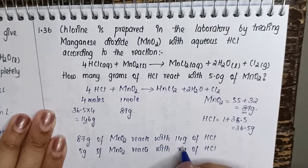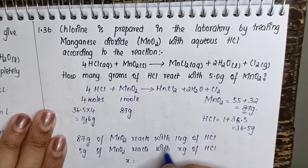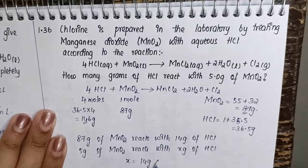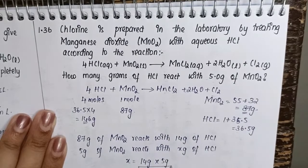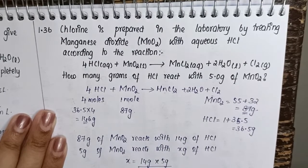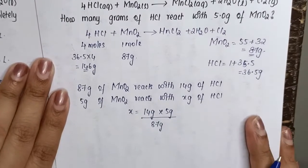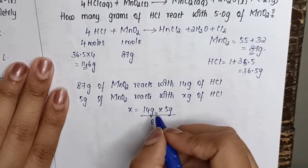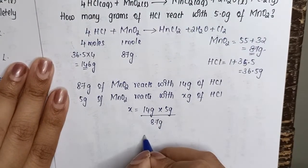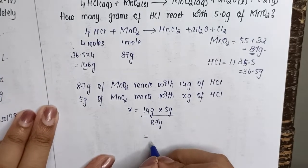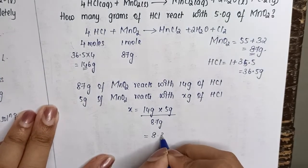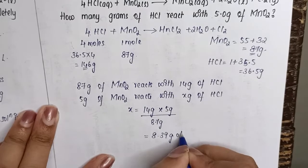Now all that we have to do is to find out x, just cross multiply. So x is equal to 146 grams into 5 grams divided by 87 grams. So we just cross multiplied it.